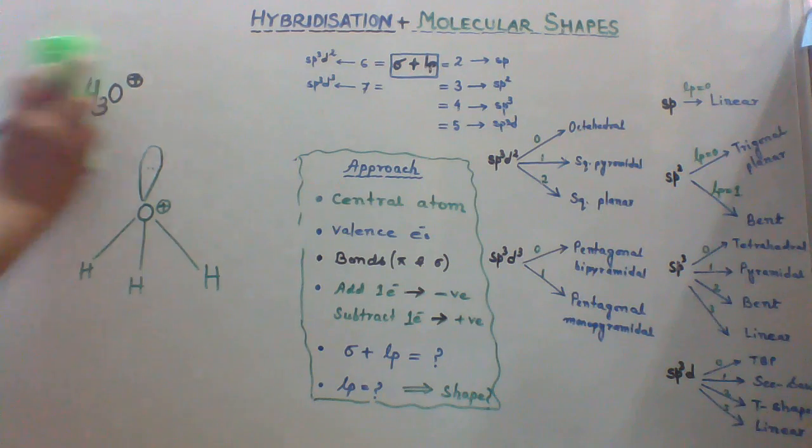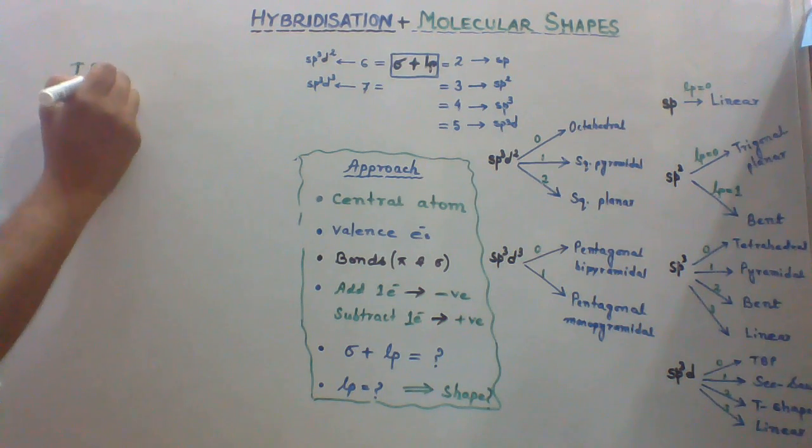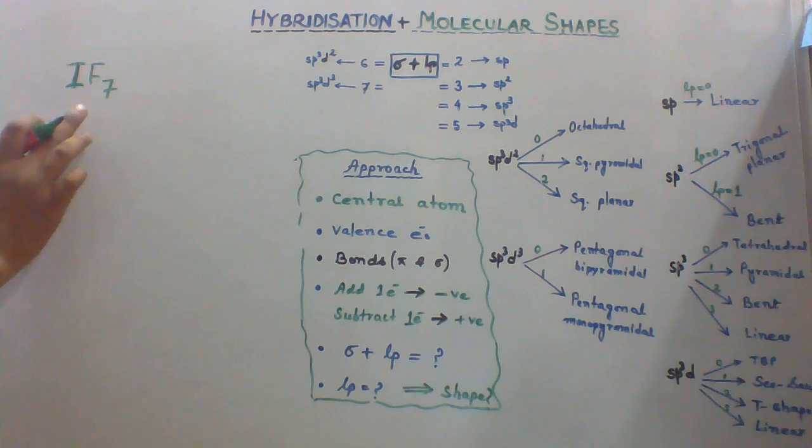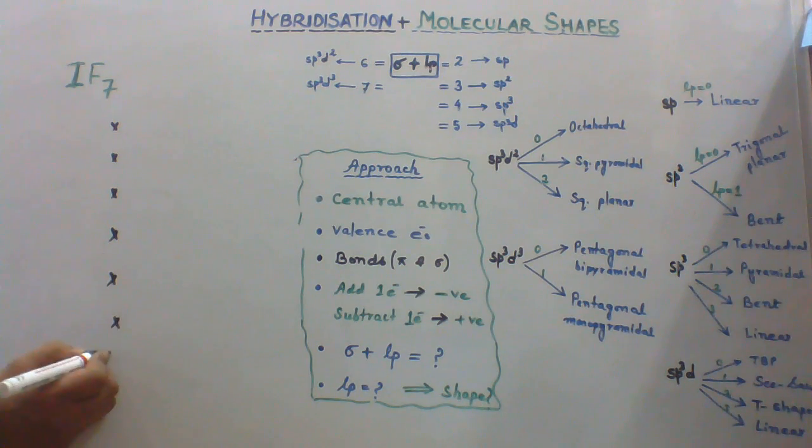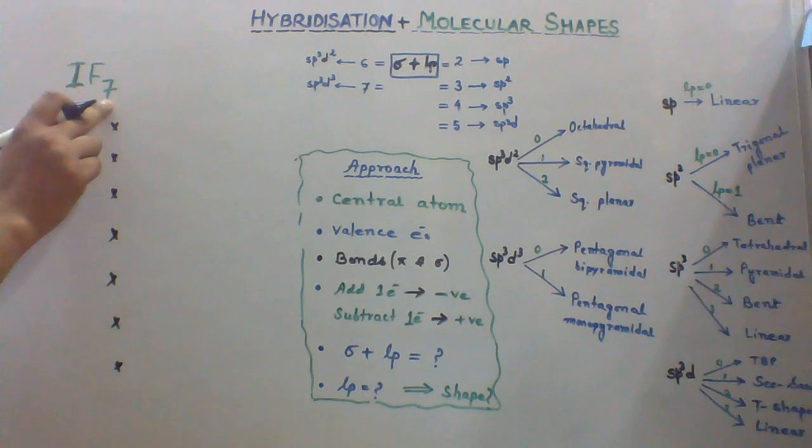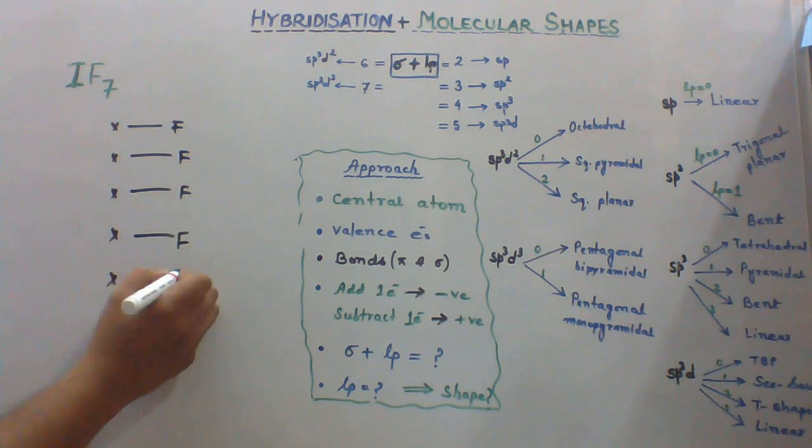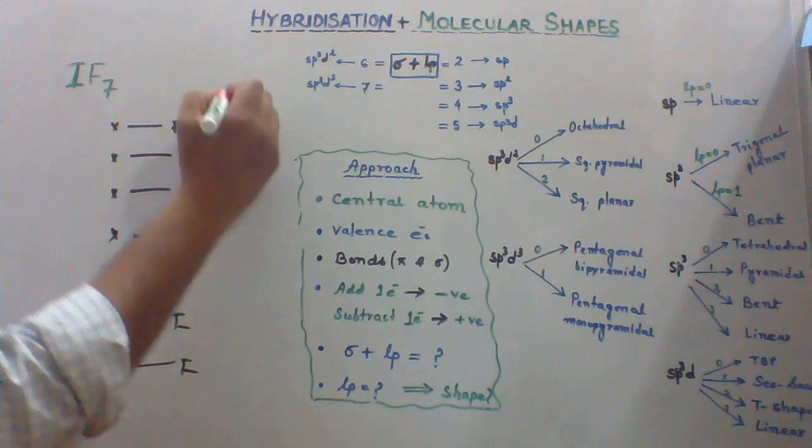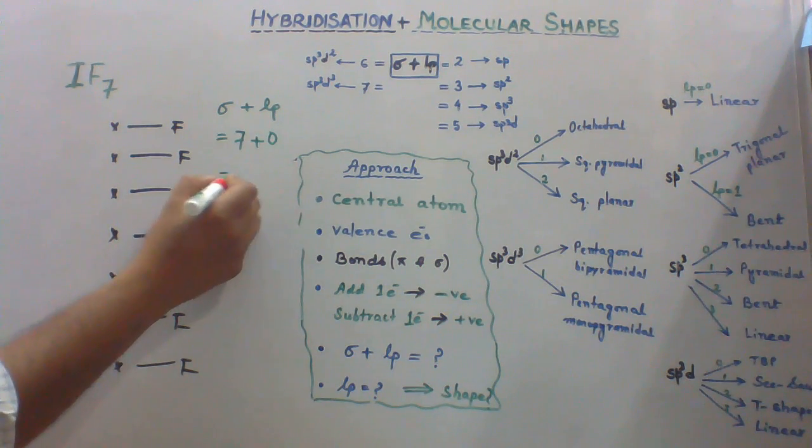Let's take another species. IF7. What is the hybridization of iodine and what is the molecular shape of this species? The central atom is iodine. Iodine has 7 valence electrons in the outer shell. We are going to put 7x. And then there are 7 fluorine atoms. Each fluorine atom has valence 1, so single bonds. Now let's count the number of sigma bonds and lone pair. We have 7 sigma bonds and we have 0 lone pair. So summation gives us 7.